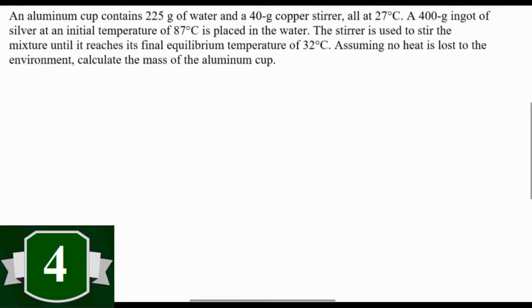This problem is review from chemistry. We have an aluminum cup of unknown mass. It contains 225 grams of water, a 40 gram copper stirrer, and they're all at 27 degrees Celsius. We put a 400 gram ingot, that's a chunk of silver, at a temperature of 87 degrees Celsius in the water. The stirrer is then used to stir the mixture until it reaches a final equilibrium temperature of 32 degrees Celsius. Assuming there's no heat loss to the environment, what is the mass of the aluminum cup?